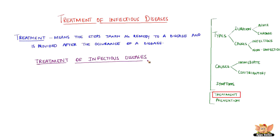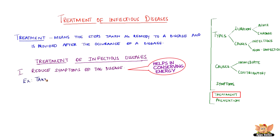Treatment of infectious diseases can be provided in two steps. First and foremost, reduce the symptoms of the disease — this helps in conserving energy. Taking bed rest is one such method which can help in reducing the symptoms of the disease. However, reducing symptoms does not cure the disease.